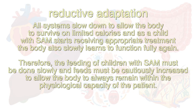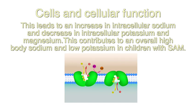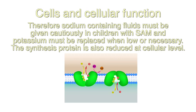Regarding cells and cellular function: the sodium-potassium pump activity is reduced and the cell membrane is more permeable than normal. This leads to an increase in intracellular sodium and a decrease in intracellular potassium and magnesium, contributing to an overall high body sodium and low potassium in children with severe acute malnutrition.